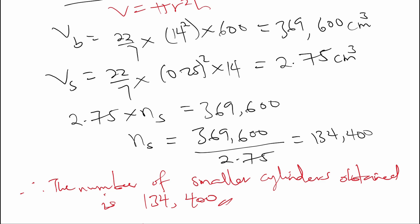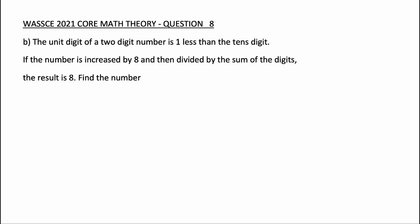Don't forget to like and subscribe for more content, and leave your questions in the comment section. Now we'll move on to question 8b. The unit digit of a two-digit number is one less than the tens digit. If the number is increased by eight and then divided by the sum of the digits, the result is eight. Find the number.